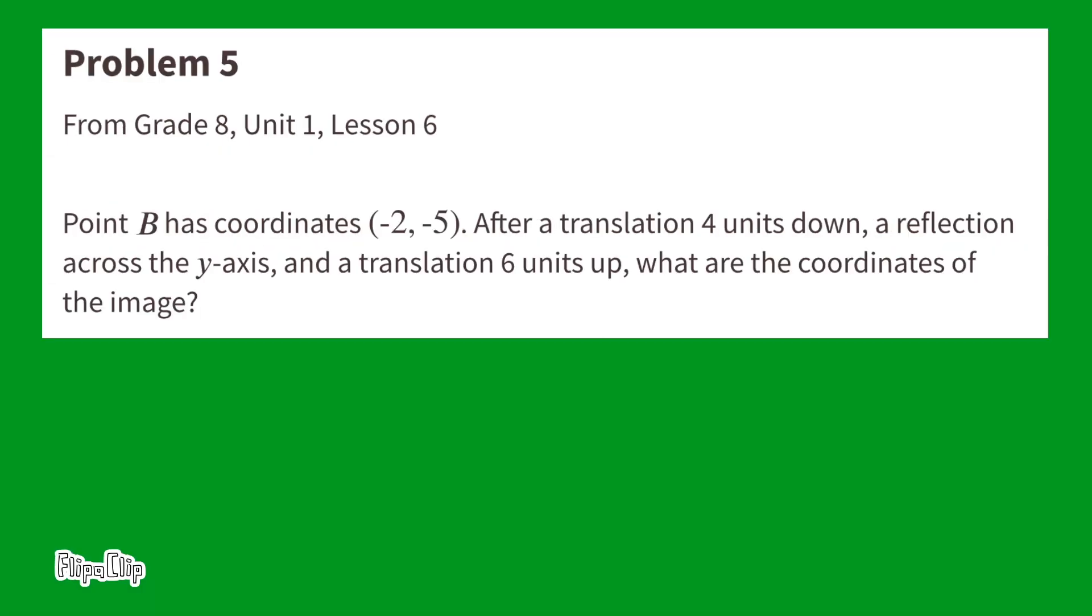Problem number five from eighth grade, unit one, lesson six. Point B has coordinates negative two and negative five. After a translation four units down, a reflection across the y-axis, and a translation six units up, what are the coordinates of the image?